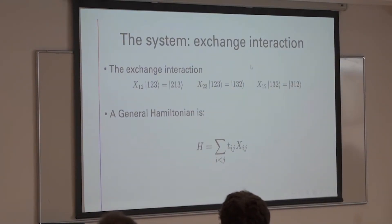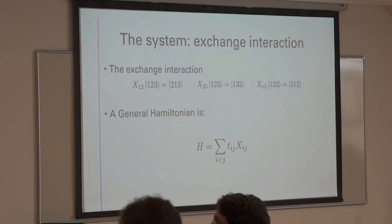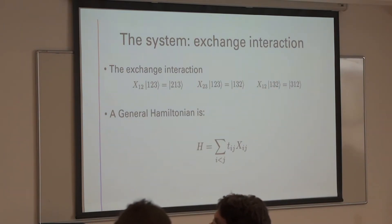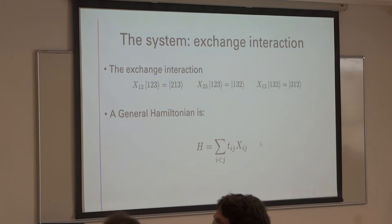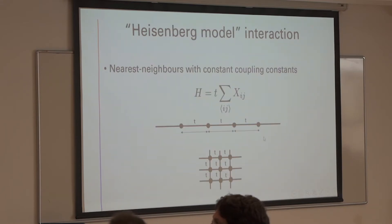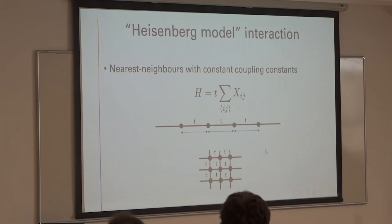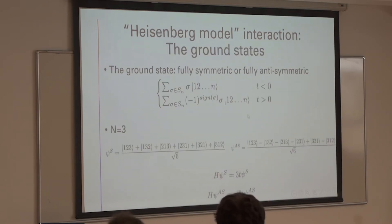A natural interaction to introduce to the system is the exchange interaction. It just exchanges the places of two particles — X₁₂ exchanges the places of particles inside sites 1 and 2. A general Hamiltonian can be written as a sum over all possible exchanges between all possible two sites. Of course we'll deal with simpler systems such as the Heisenberg model, where it's just the nearest neighbors with constant coupling constants — this is the one-dimensional and the two-dimensional case.